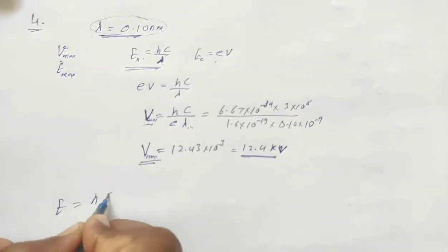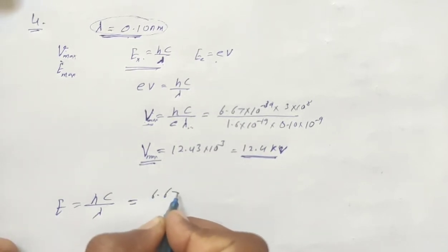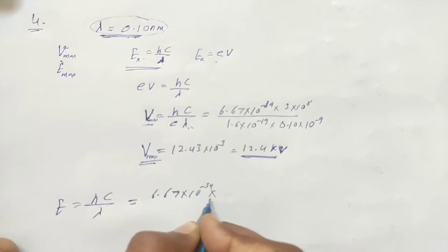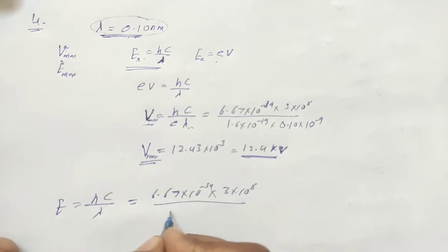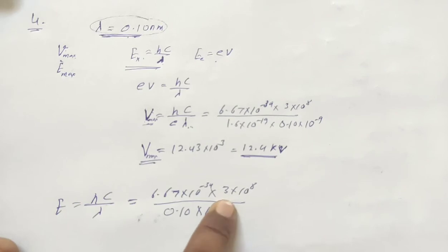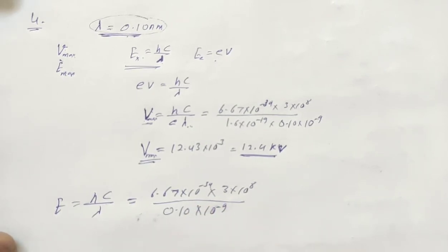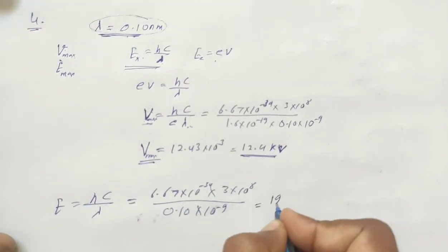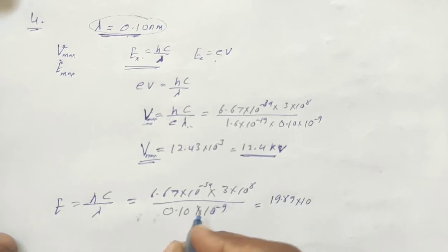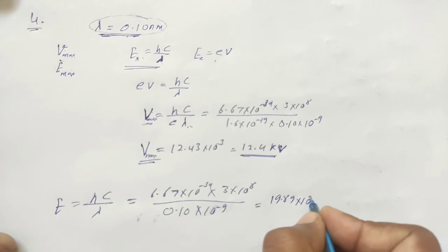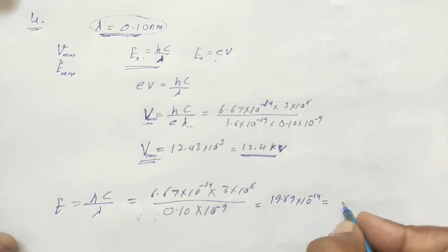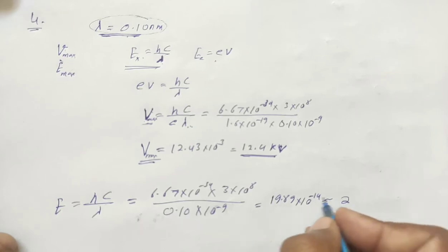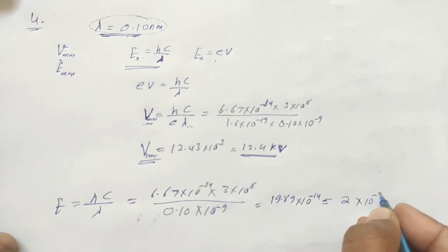The potential difference equals hc/λ. With h = 6.67 × 10⁻³⁴, c = 3 × 10⁸, and λ = 0.10 × 10⁻⁹, multiplying 6.67 by 3 and adjusting the powers gives approximately 1.9 × 10⁻¹⁵, which we can approximate as 2 × 10⁻¹⁵ joules. This is the energy of the X-ray photon.